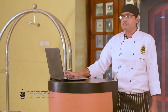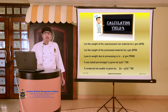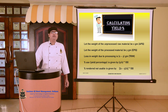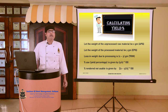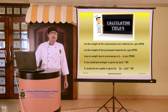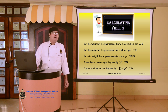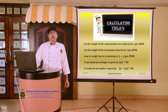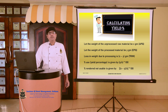We will take a very simple example to find out how we can calculate the yield percentage. Say for example, some unprocessed raw material has been procured from the market, which is the APQ, and let that be X grams. Now after it has undergone all the process and it has been served on the platter of the guest, let it be Y grams. We calculate the loss in weight due to processing, which is APQ minus EPQ — that is the concept of trim: X minus Y.